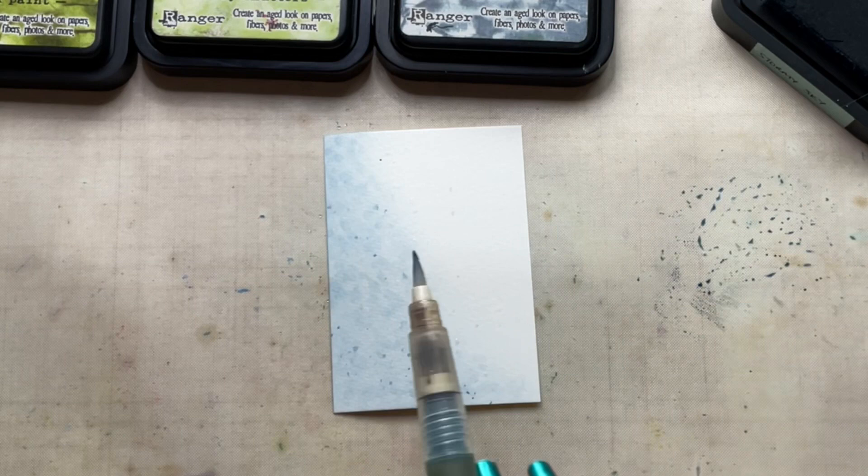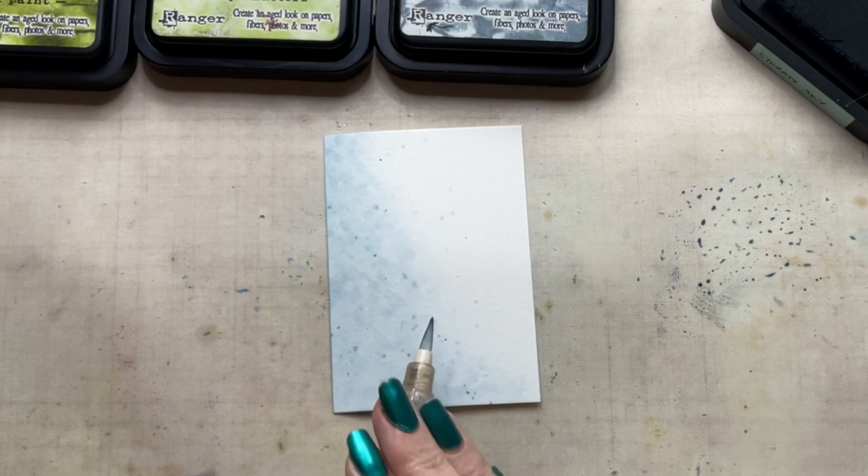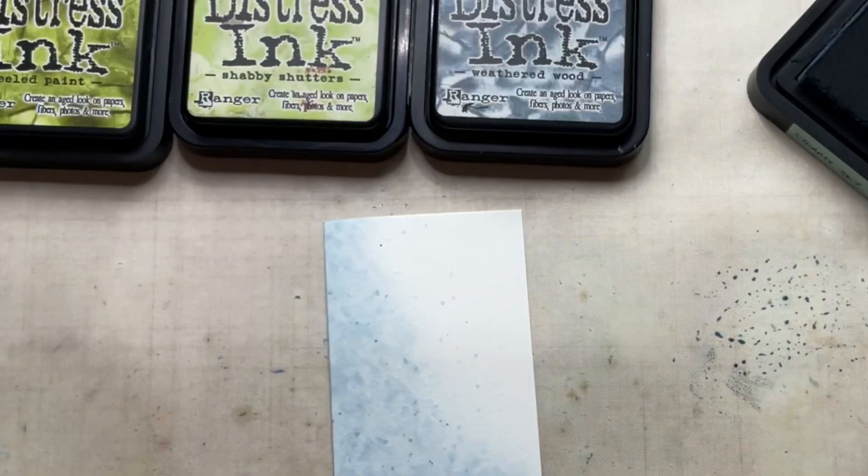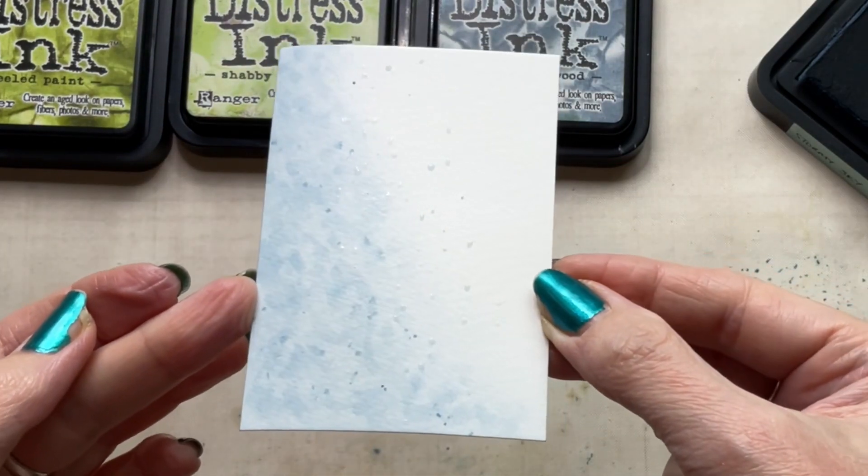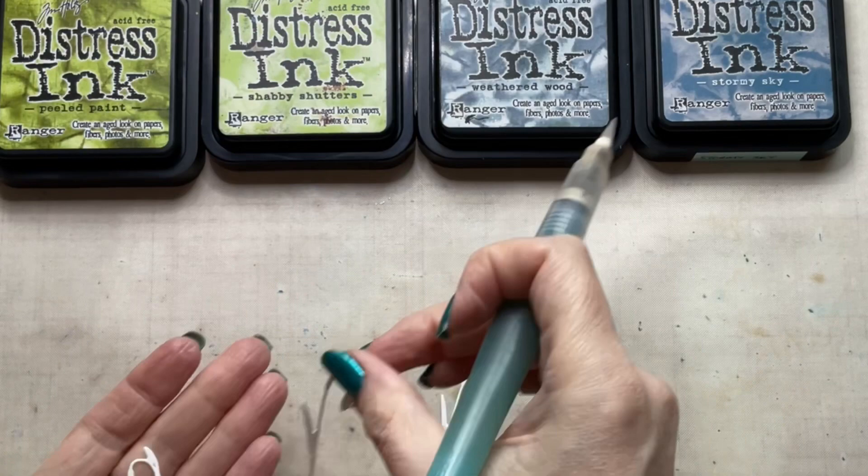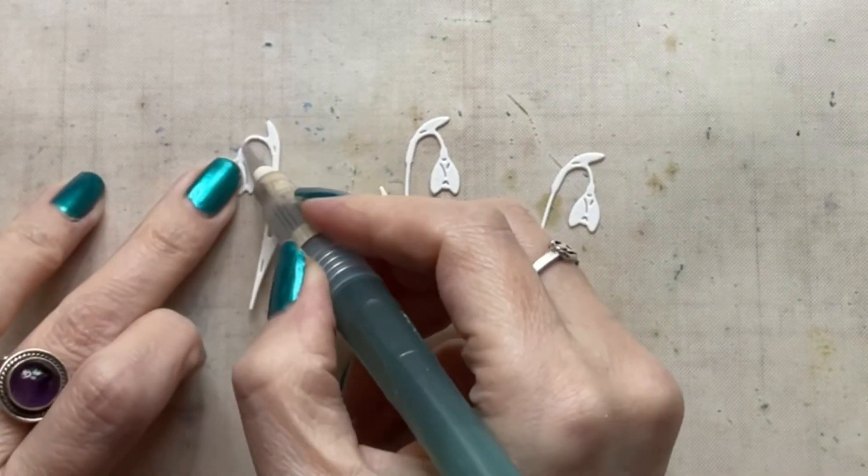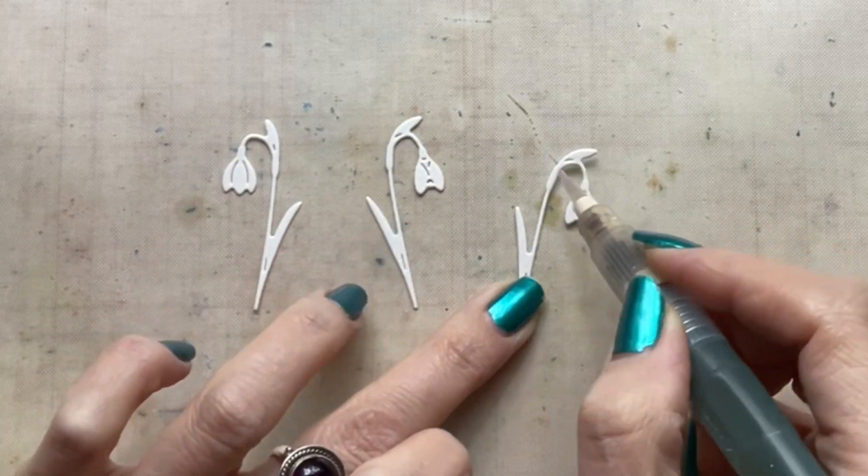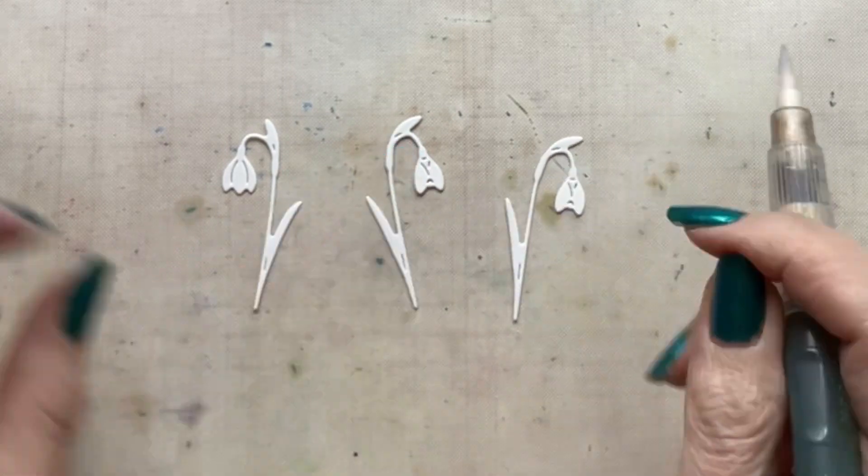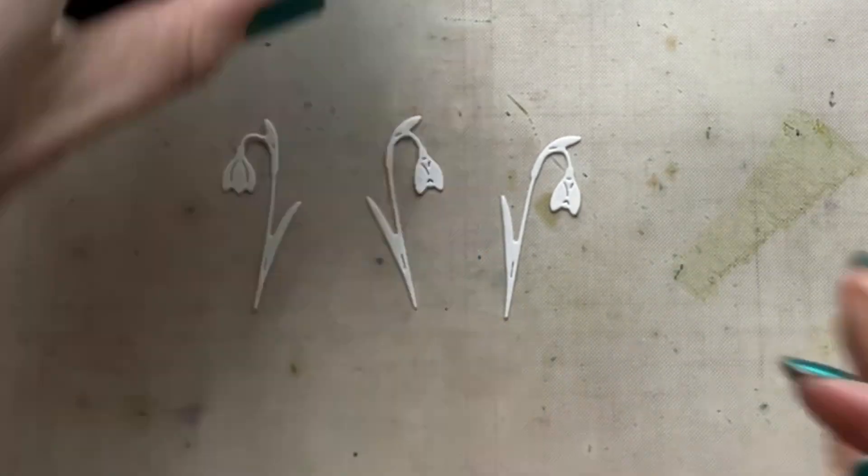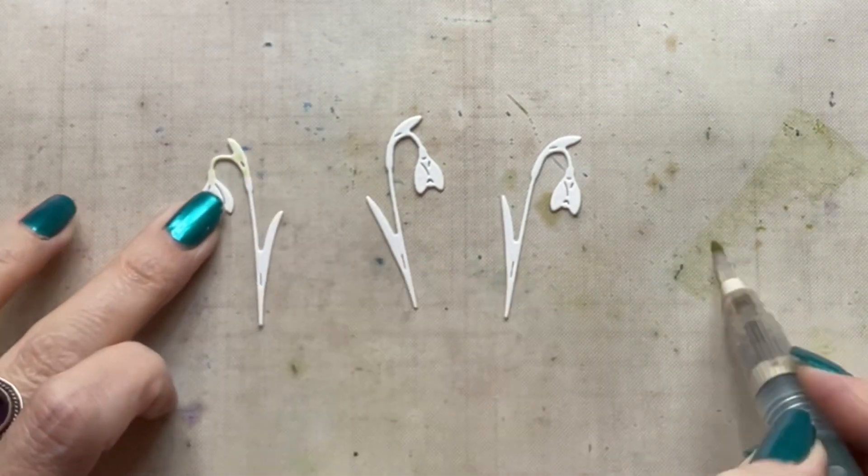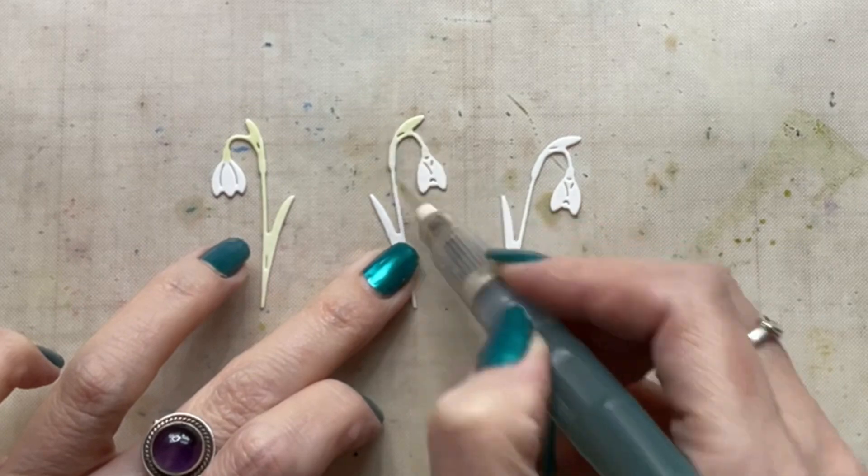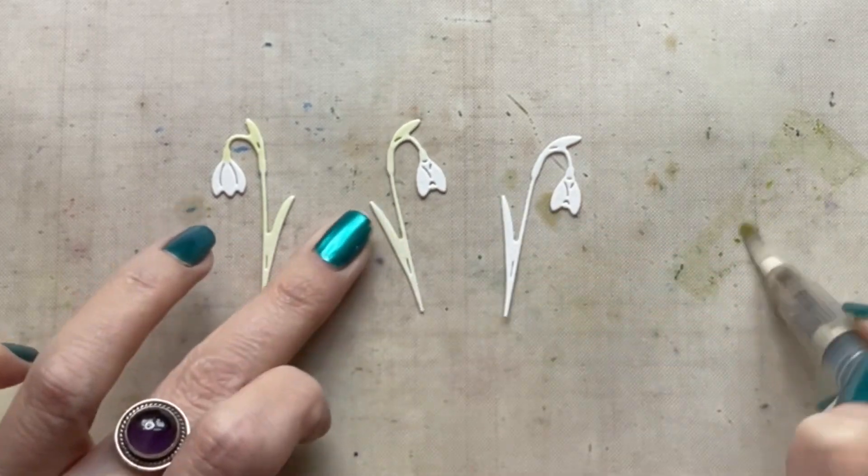Once I've done this I'm using a collection of die cuts by Gummiapan, this is a Swedish company that I've mentioned before. I will put a link to that company in the video description and they are an exceptionally good company in terms of the quality of the die cuts and also how fast they ship them out, so highly recommended. This first flower is a snowdrop. You get two snowdrops in the die set but one of them I've cut twice so I've got three in total because most art projects do look better with odd numbers of elements.